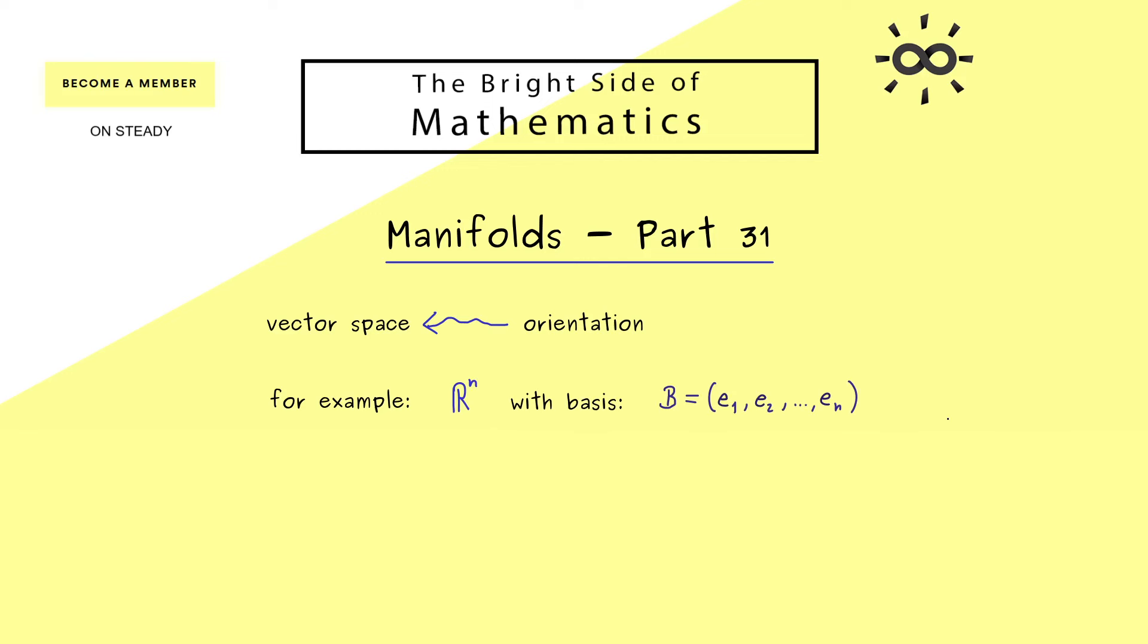where we have a standard basis. Let's call this basis B with e_1, e_2, and so on. By definition, this is a positively oriented basis. Hence, R^n together with this basis has an orientation, and we say it's the positive orientation. The first question that comes to mind is: what happens with the orientation if we change the basis?